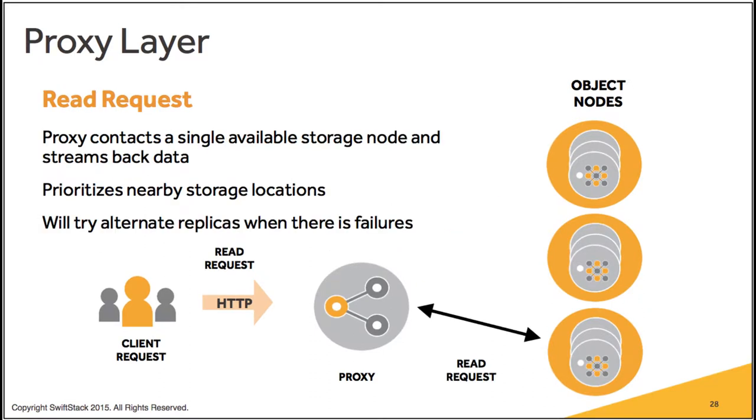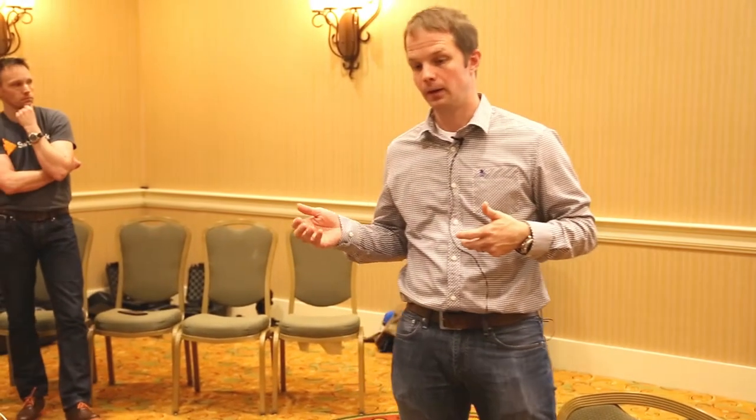On a read request, the same network selection determines which proxy you end up at. If your cluster spans the world, geographic DNS load balancing at the top layer gets you to a proxy close to you. You make a read request; the proxy knows it has three or ten copies, picks one object node based on historical performance, makes a request to that object node, gets the object, and passes it back to the client.